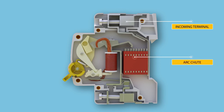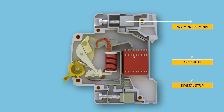The next part is the arc chute. An arc chute is a stack of mutually insulated parallel metal plates which divide and cool the arc. The bimetallic strip is part of the thermal tripping arrangement, around which a heater coil is wound to create heat depending on the flow of current.